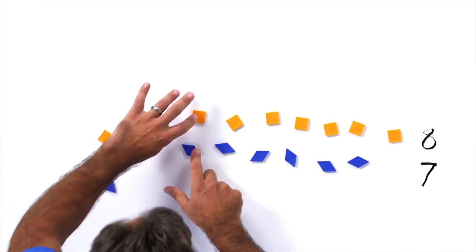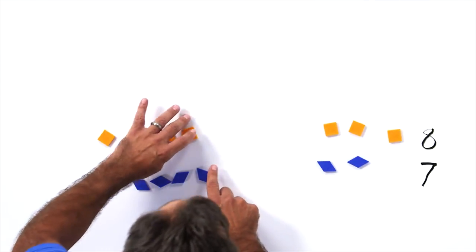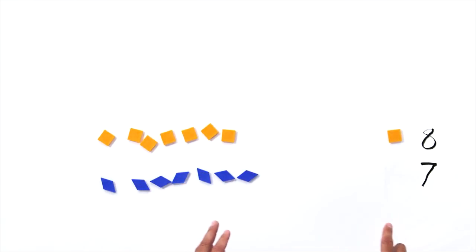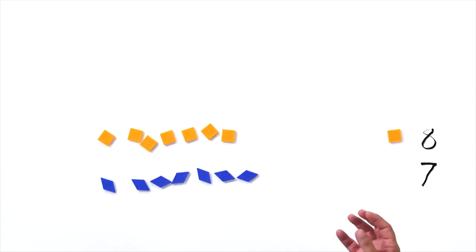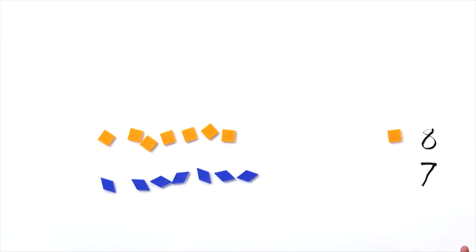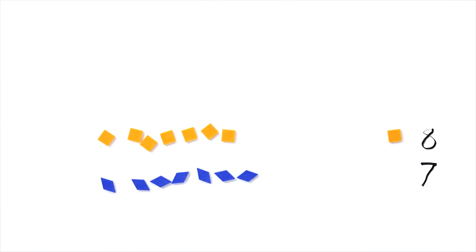Now they can practice one-to-one correspondence again by taking away — one blue, one orange, one blue, one orange — until there's no blue left. The students should notice: I took those away one at a time and was left with an orange one, which means I must have had more orange ones. Since the eight is matched with the orange, eight must be more than seven. That's how we want students to understand why a number is bigger than another — by looking at the physical model.